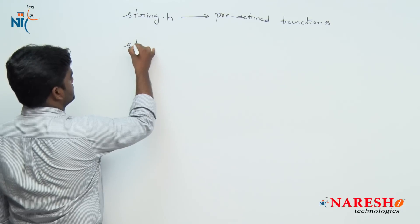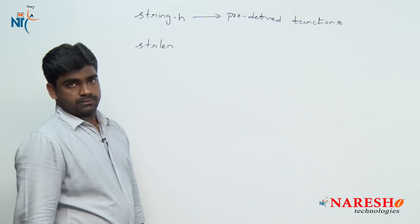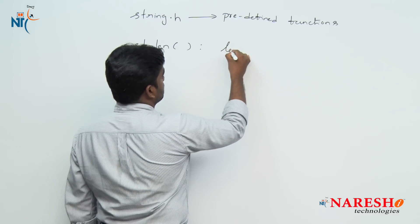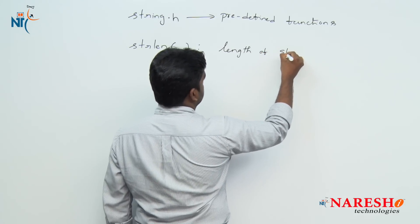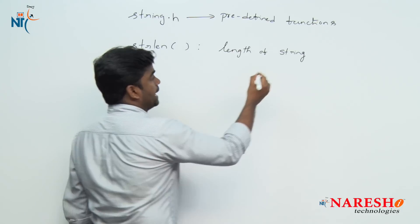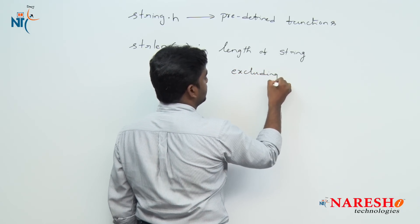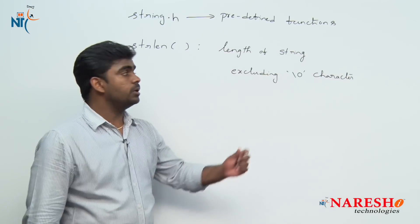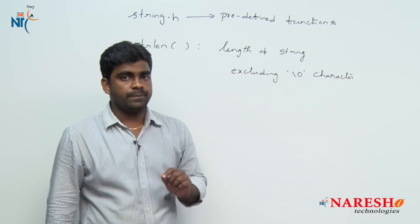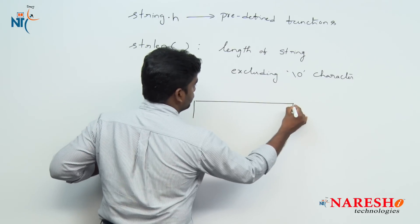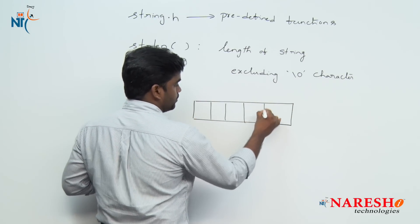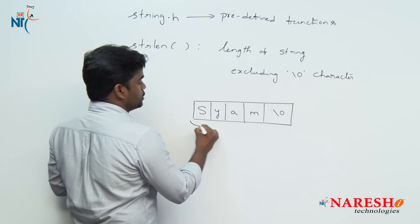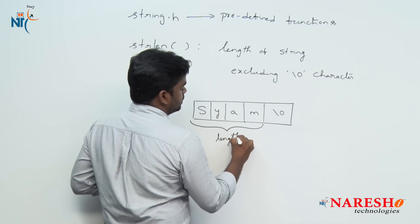One function is strlen — string length. What does it do? It returns the length of the string, excluding the null character. When it returns the length, it does not count the null character. For example, take the name 'sham' — the last character is a null character. The length is only four characters, so it will return 4.